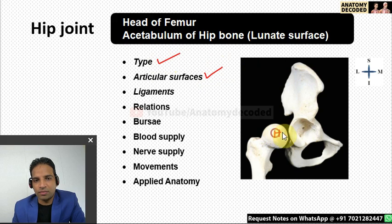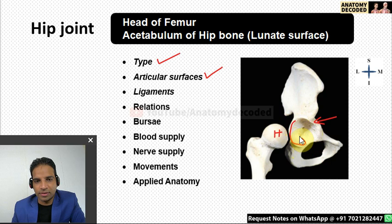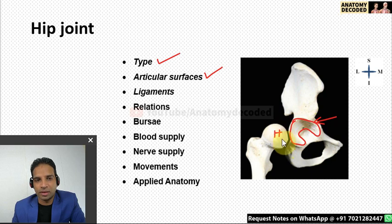The head of the femur forms the ball component of the ball and socket, and the acetabulum of the hip bone forms the socket. The particular articular surface is referred to as the lunate surface — it's the horseshoe-shaped surface in the acetabulum which articulates with the head of the femur.